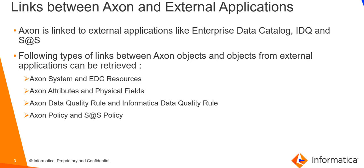We can retrieve links between Axon system and the EDC resources as well as Axon attributes and EDC fields. These links are established between Axon objects and EDC objects post Axon-EDC integration. Similarly, once Informatica Data Quality is linked to Axon, users can link data quality rules in Axon to the data quality rules in IDQ, and these links can also be retrieved using the REST API. In this video, we will focus on how to retrieve the links between Axon system and EDC resources, and discuss the procedure to retrieve other types of links in upcoming parts.